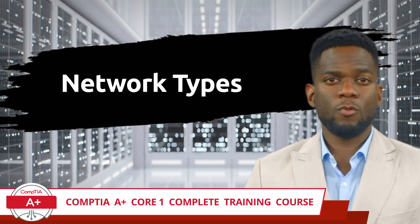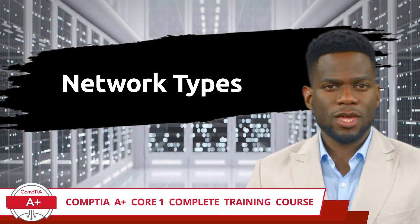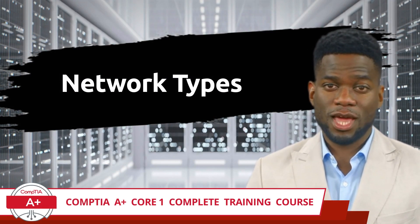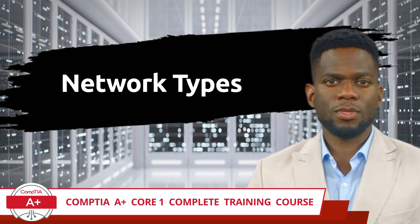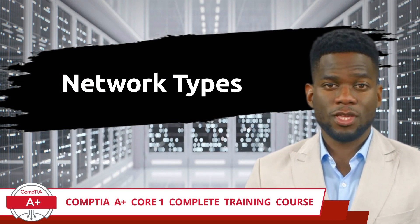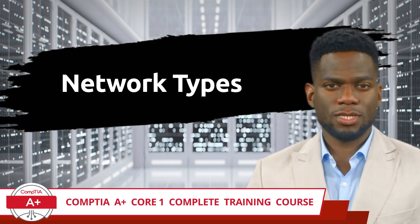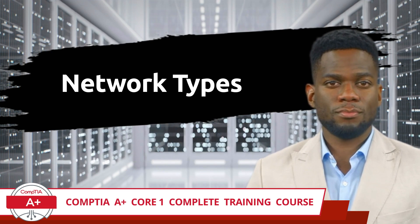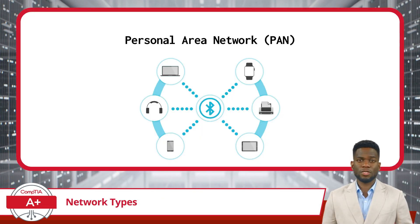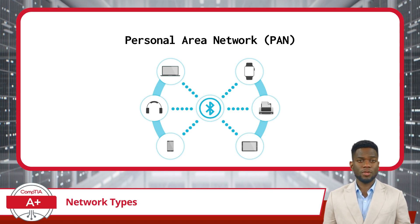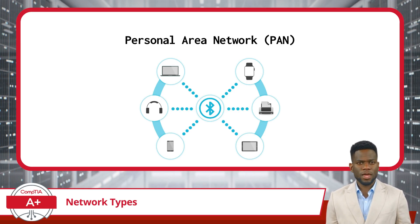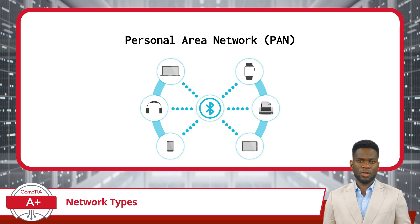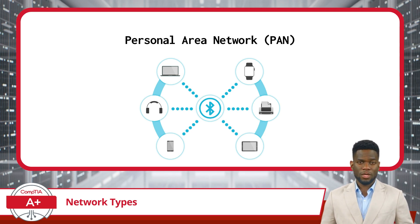CompTIA A Plus Core 1 Complete Training Course, Exam Objective 2.7: Compare and contrast Internet Connection Types, Network Types, and Their Features. Networks of different sizes can be categorized in different ways based on their coverage and scale. In this video, we will cover the most common network types, starting with a PAN, or Personal Area Network.